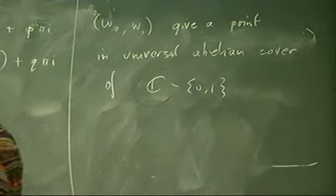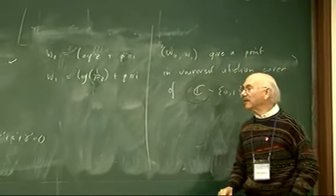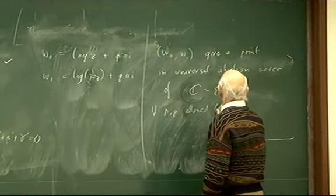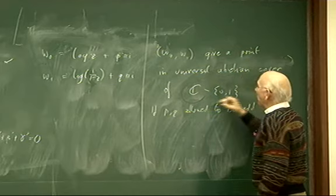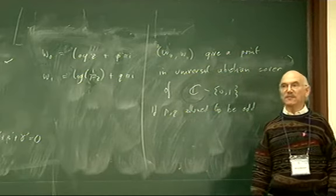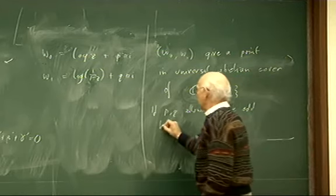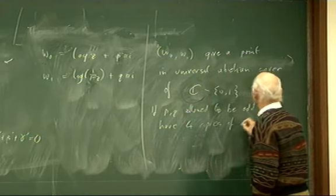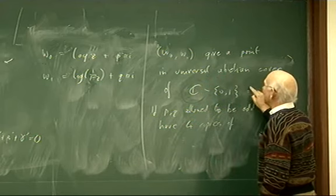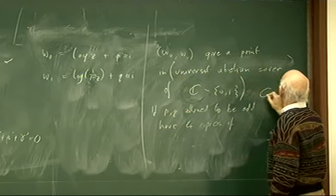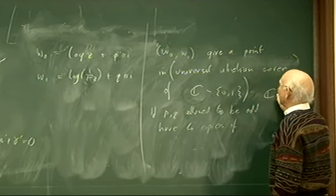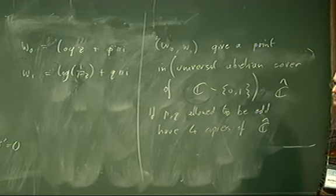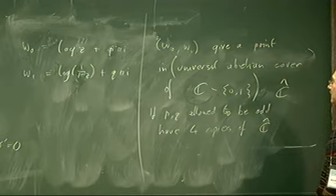Changing the branch of log z takes the cover over 0, while changing the branch of log(1−z) changes the branch over 1. This isn't quite right because p and q may be odd, so if p and q are allowed to be odd, we're actually getting four copies of this universal abelian cover of ℂ minus {0,1}.